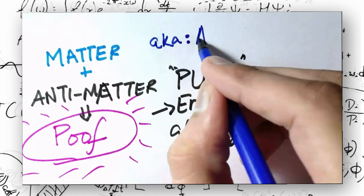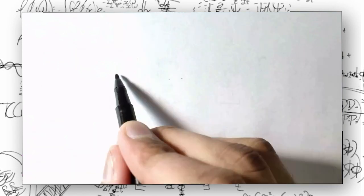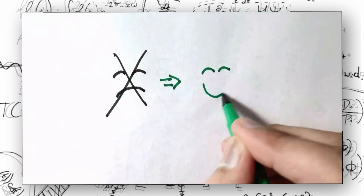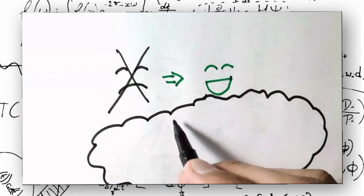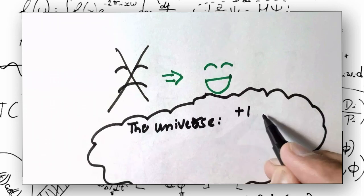But not all is unfortunate. There's always some good thing to think about. We are here, you and me, because there was slightly more matter than antimatter at the beginning of the universe's expansion.